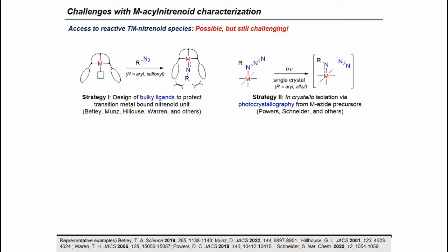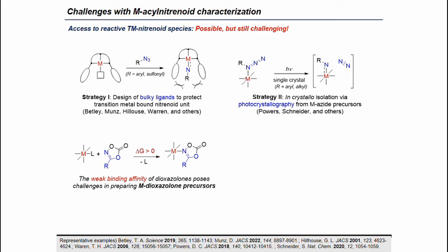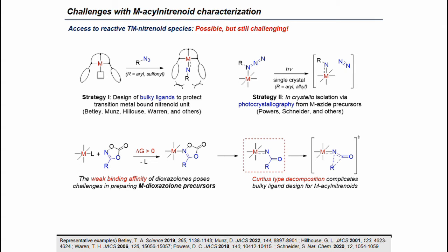Because of the reactive nature of metal nitrinoid species, there are only a few examples of isolated or detected reactive metal nitrinoid species. Recent studies by the Betley group demonstrated the use of a bulky ligand system to stabilize the nitrinoid core. The Powers group applied photocrystallographic analysis to a dirhodium boronate complex to capture the transient rhodium nitrinoid species in a crystalline matrix. However, for our system using dioxazolones, isolation of such nitrinoid species is quite difficult, mainly because since dioxazolone is a weakly binding ligand, characterization of the initial dioxazolone coordination event is difficult.